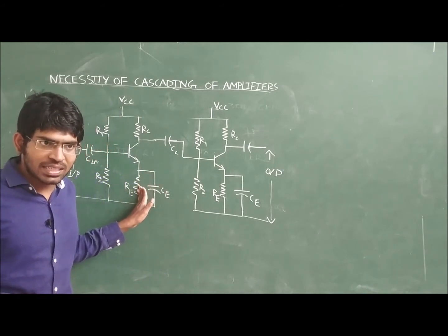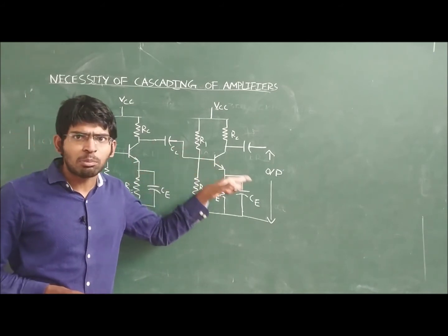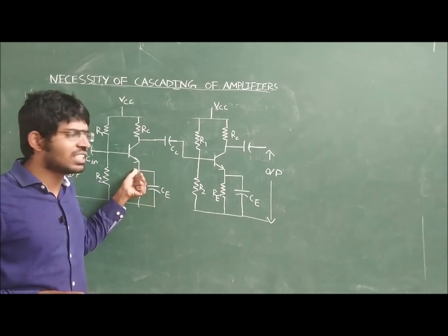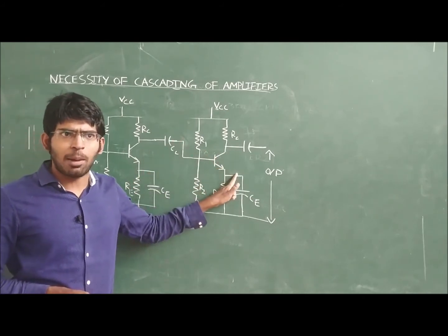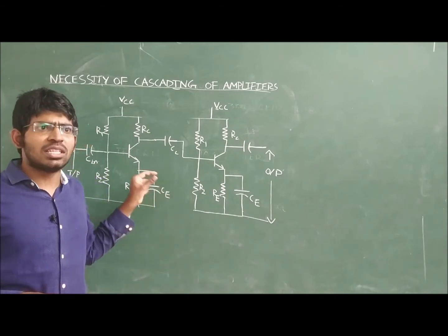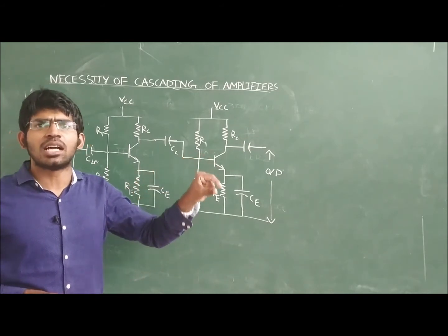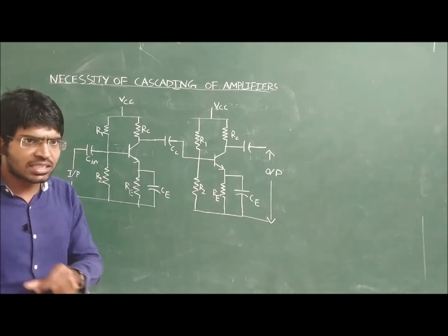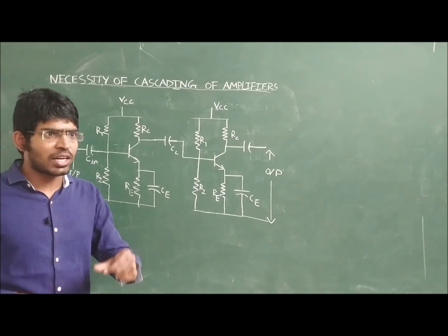Cascading means connecting the two same types of amplifiers. This is CE amplifier and this is CE amplifier. We are connecting in series these amplifiers. So this is called as cascading of amplifiers. The reason for cascading is in order to get the better gain.